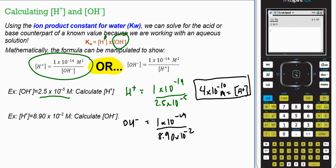So into my calculator, 1 double E negative 14, divided by 8.9 double E negative 2. And we get 1.1236 E negative 13.